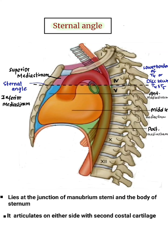In this video, we are going to learn about the sternal angle. The sternal angle is also known as the angle of Lewis. It lies at the junction of the manubrium sternum and the body of sternum. It articulates on either side with the second costal cartilage. It forms an important landmark for counting of the ribs.